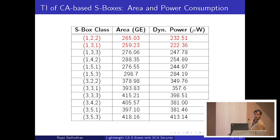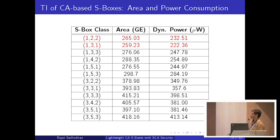One observation — though we don't have a formal proof — is that if the number of cubic terms is less, the S-box class becomes more area and power efficient (cubic terms take first priority). And if the number of cubic terms are the same, then the sum of linear and quadratic terms should be less to make it more area and power efficient.